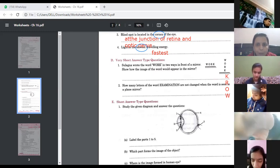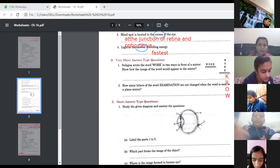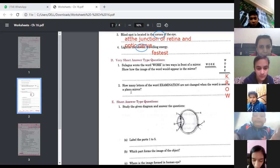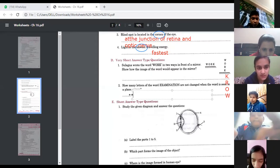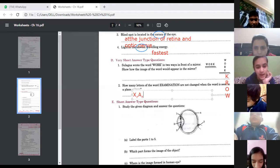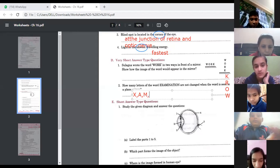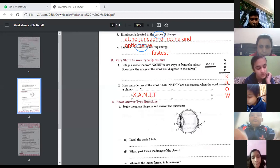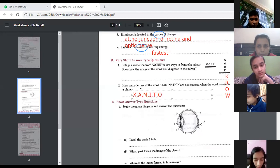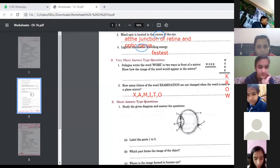Go for question number two. How many letters of word examination are not changed when the word is seen in the plane mirror? Very interesting question. Which letter does not change? First X. Other? A. M. I. Why not? T. O. N. N changes. So this question number two we have done.